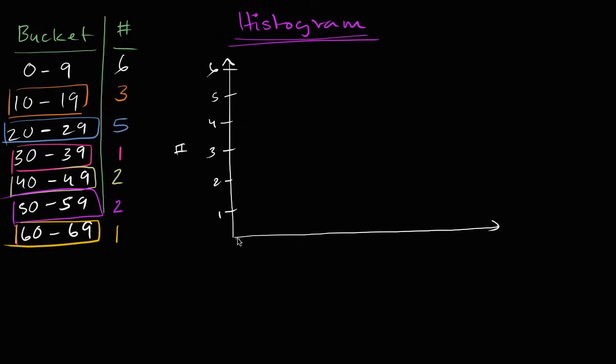So I have one bucket. This is going to be the zero to nine bucket. Right over here. Zero to nine. Then I'm going to have the three. Actually, let me just plot them since I have my pen that color. So in zero to nine, there are six people. Zero to nine, there are six people. So I'll just plot it like that.